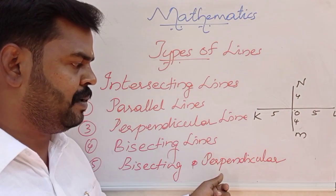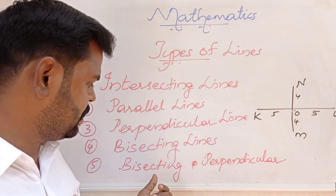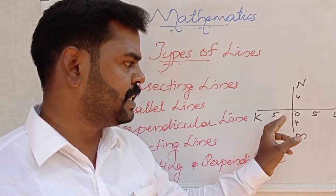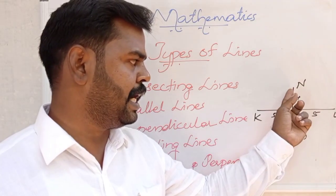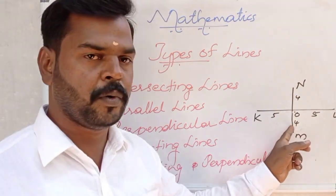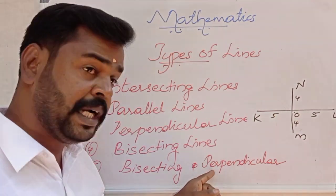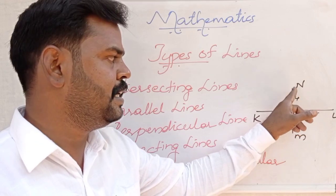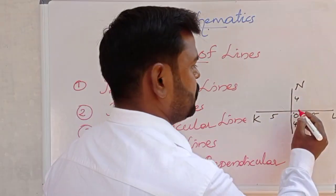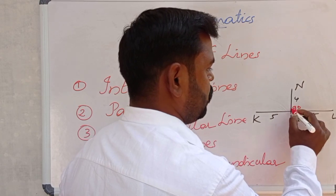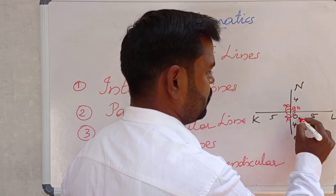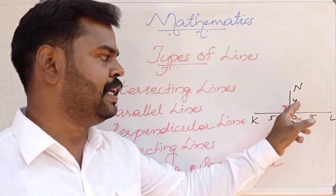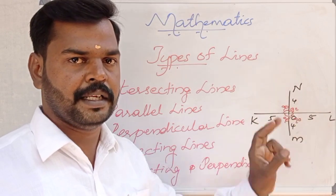Next we discuss perpendicular bisector. Line KL and NM — bisecting means dividing into two equal parts: here five and five, here four and four. And it is also perpendicular, meaning they touch and make an angle of 90 degrees. Here angle NOL is 90 degrees, and all angles are 90 degrees. So a perpendicular bisector divides into two equal parts and makes an angle of 90 degrees.